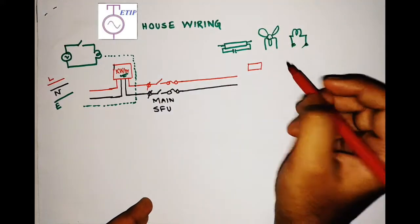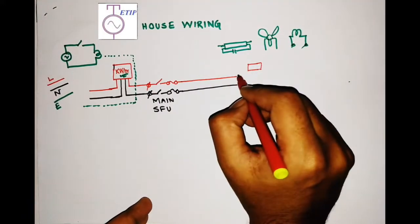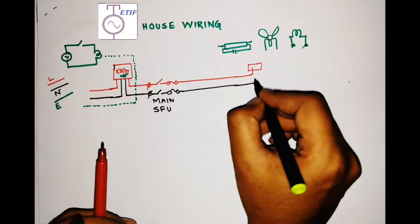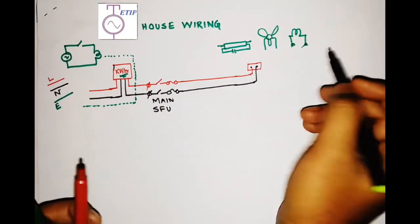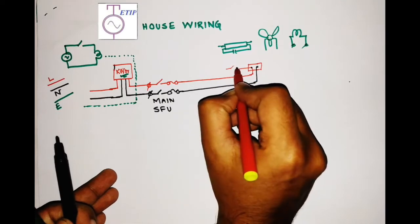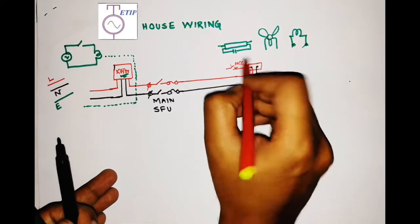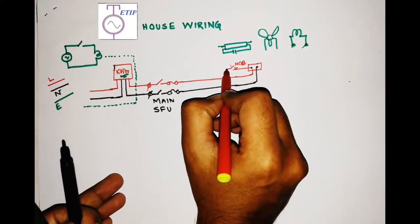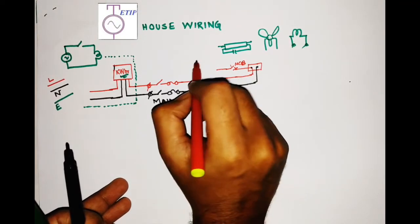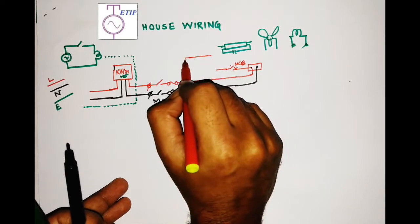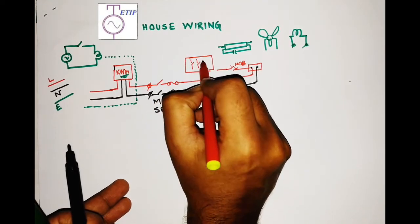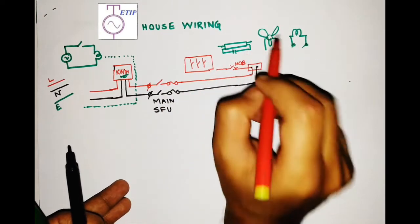Place a junction box anywhere in the room. The line and neutral will come to that junction box. From there, you start your circuit — first you take the line to an MCB for protection. From the MCB, you go to your local switchboard. The switchboard will have one switch for the lamp, one switch for the fan, and another switch for the tube light.